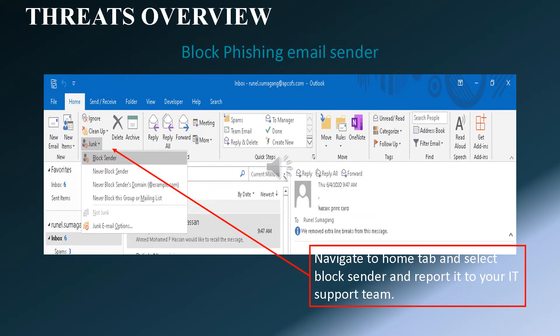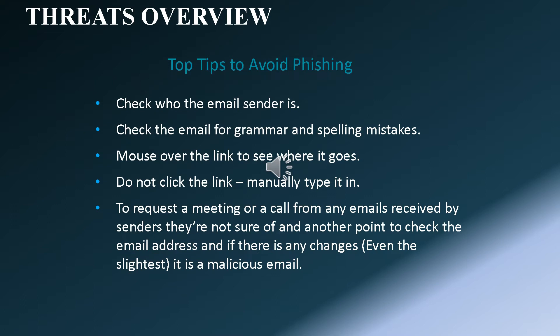Here are simple steps to block a phishing email from your Outlook account. First, select the phishing email from your inbox and navigate to the delete icon located above the right side of your window. Click Junk and select Block Sender. Report it to the IT team for further action. Tips to avoid becoming a victim of phishing: look carefully and check who the email sender is. Check the email for grammar and spelling mistakes. Mouse over the link to see where it goes. Do not click the link — manually type it in.